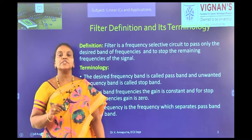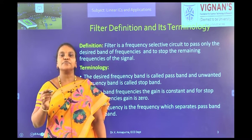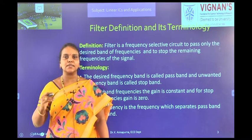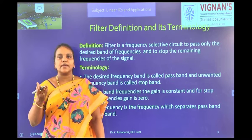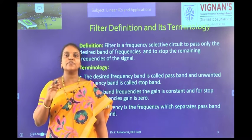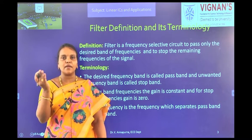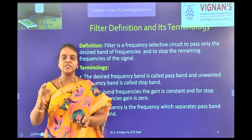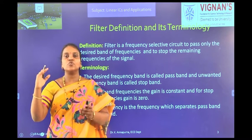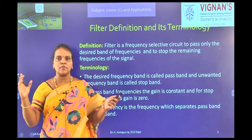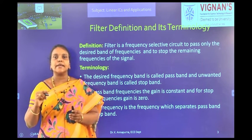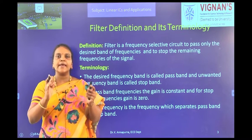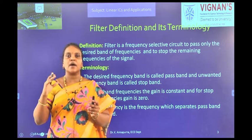In our daily life also we see filters. For example, if we take a tea filter — what is its function? It stops the unwanted tea dust and passes the wanted tea. In online shopping, what do we do? We select a filter — male or female — we segregate. Suppose we are purchasing clothes for a male of 20 years age; with the help of filters, only those products we can see instead of all products. Similarly, in communication engineering, there is a need to pass only a range of frequencies and stop other frequency signals.